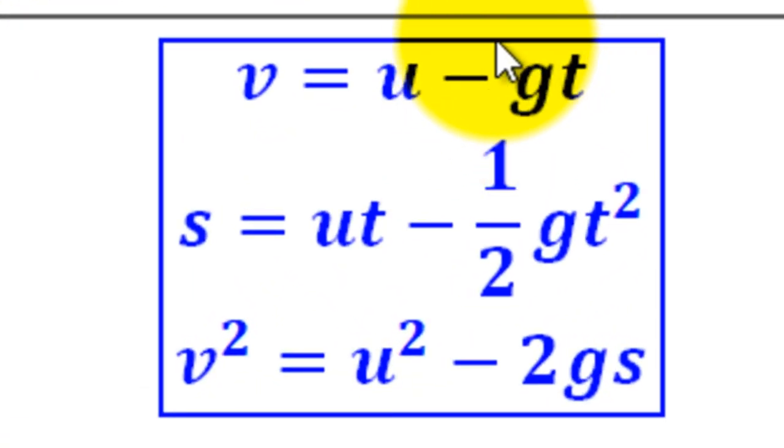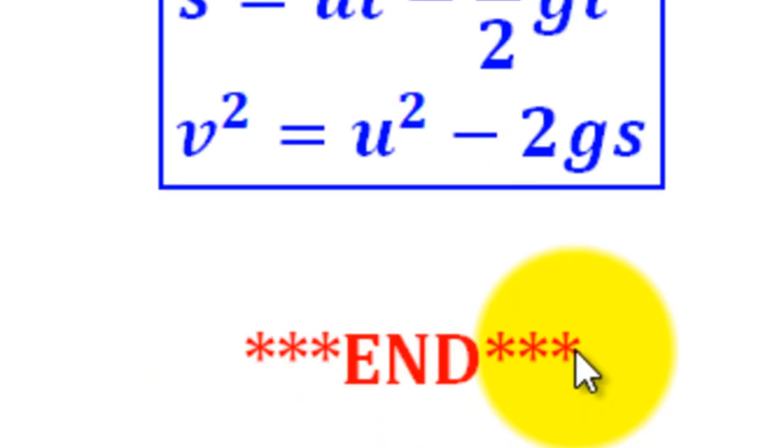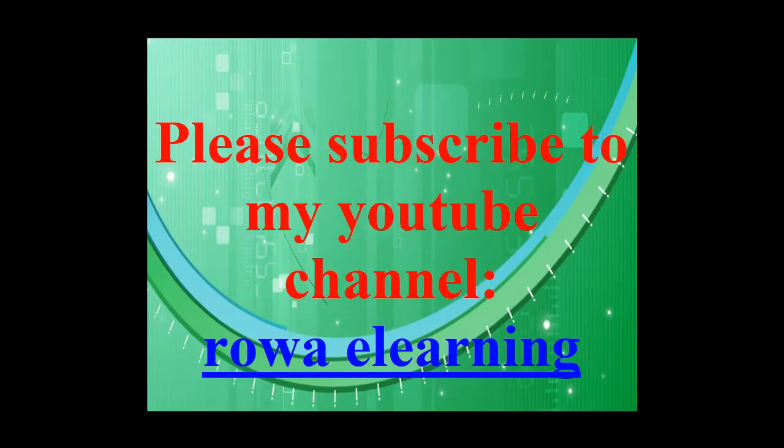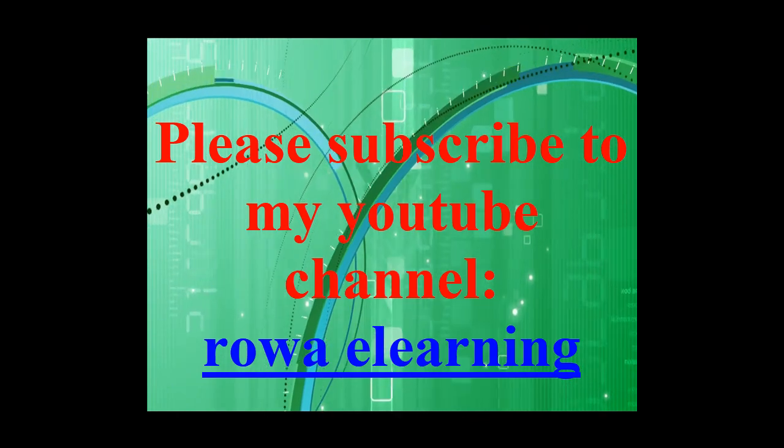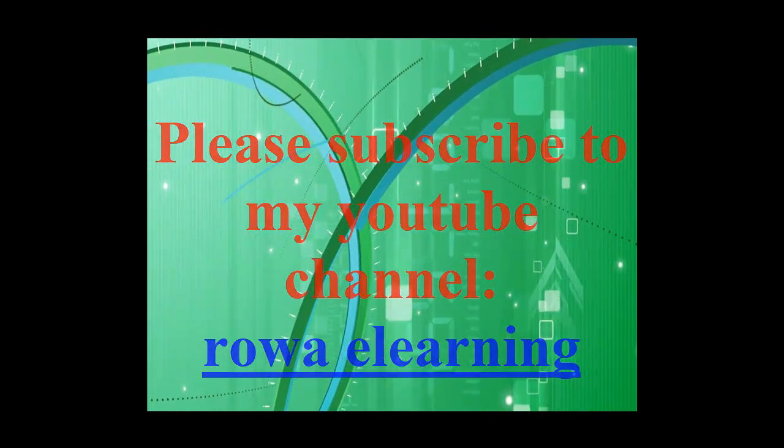The equations will be as follows: replace a with negative g. We shall get v equal to u minus gt. Second equation, replace a with negative g, we get s equal to ut minus one half gt squared. Third equation, replace a with negative g, we get v squared equal to u squared minus 2gs. That has been our lesson for today. Tune in next time for the next lesson. Thank you for watching.